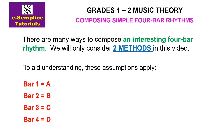To aid your understanding, these assumptions apply: bar one is A, bar two is B, bar three is C, bar four is D. You will see how this applies to composing an interesting four-bar rhythm. Let's proceed.